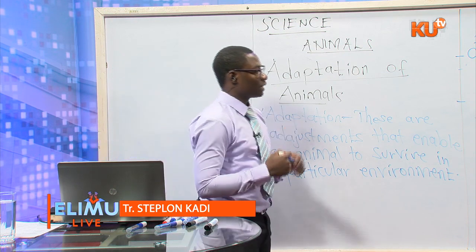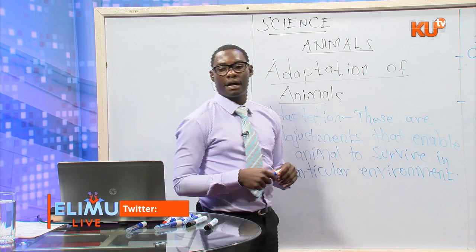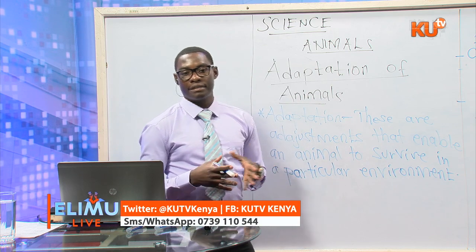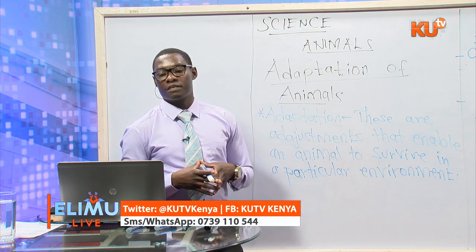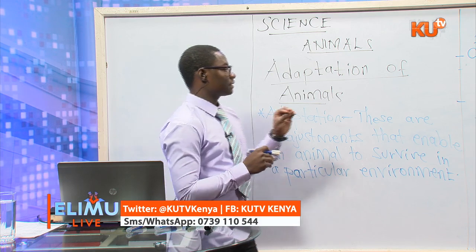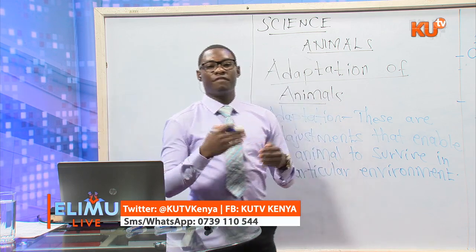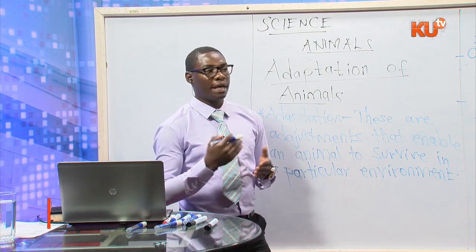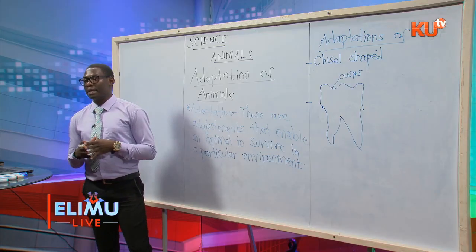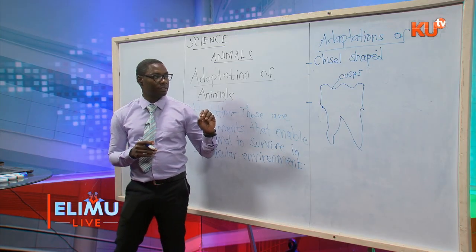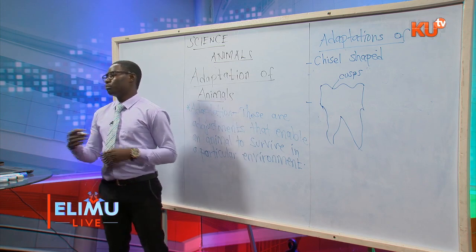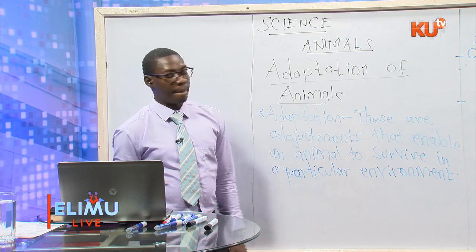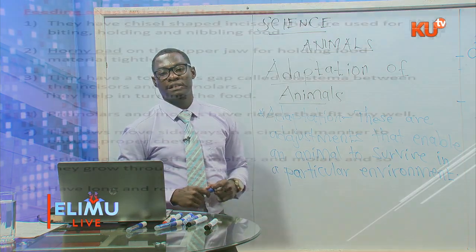Because herbivorous animals keep on chewing, that chewing causes friction, and friction results in wear and tear of the premolars and molars. For that reason, the premolars and molars keep growing and replacing each other, so the animal can continue chewing properly.